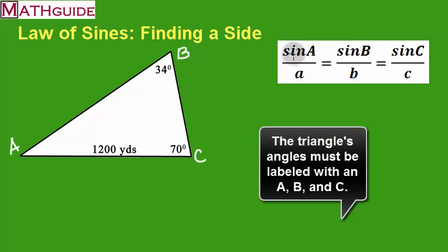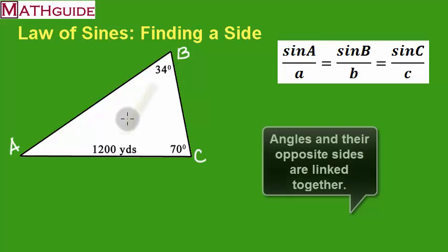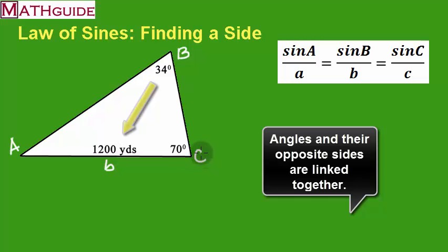Another little detail about this formula is that you have to associate an angle and its opposite side together. So if this is angle B, then opposite it is going to be side B. Likewise, if this is angle C, then opposite it is going to be side little c.